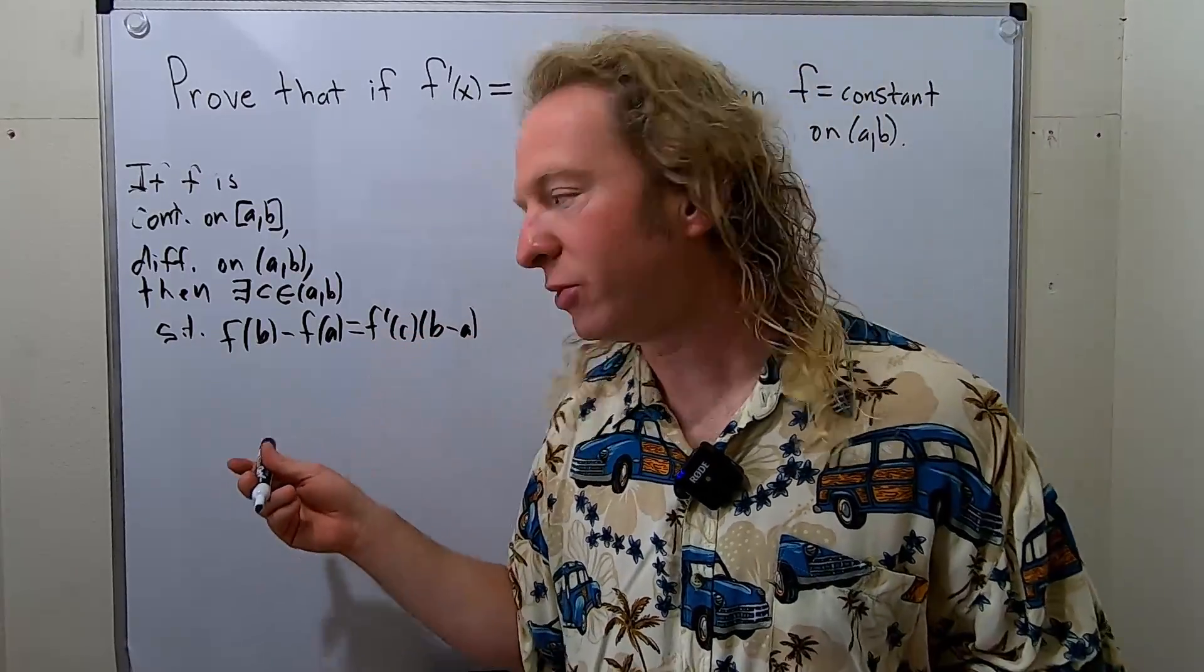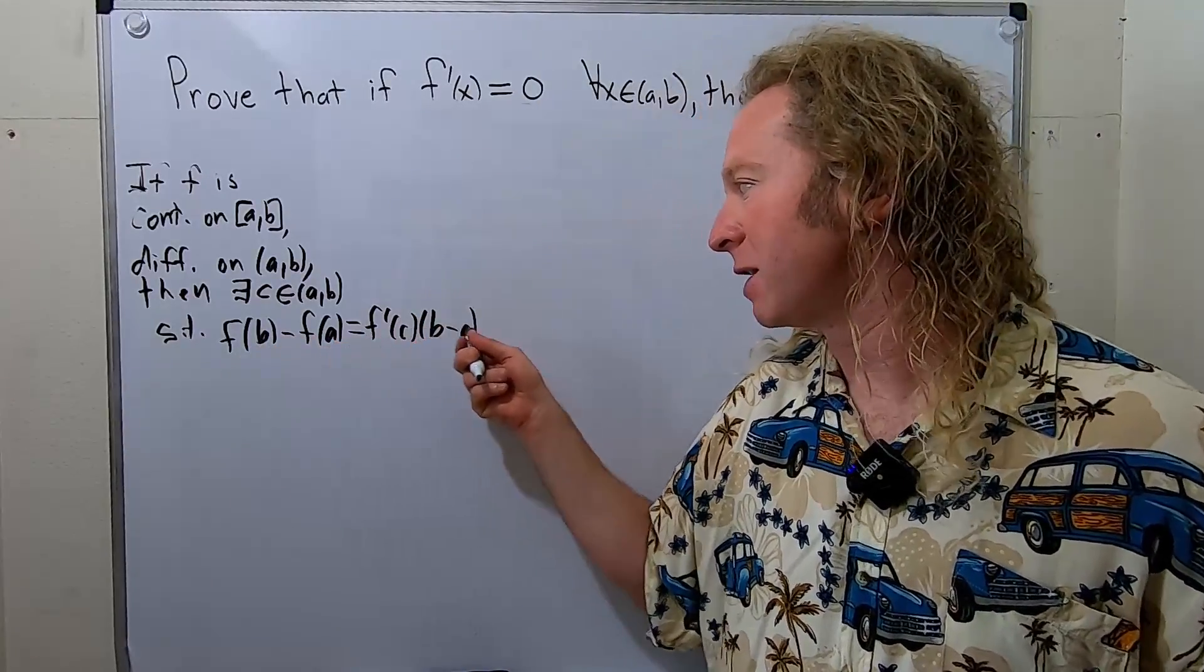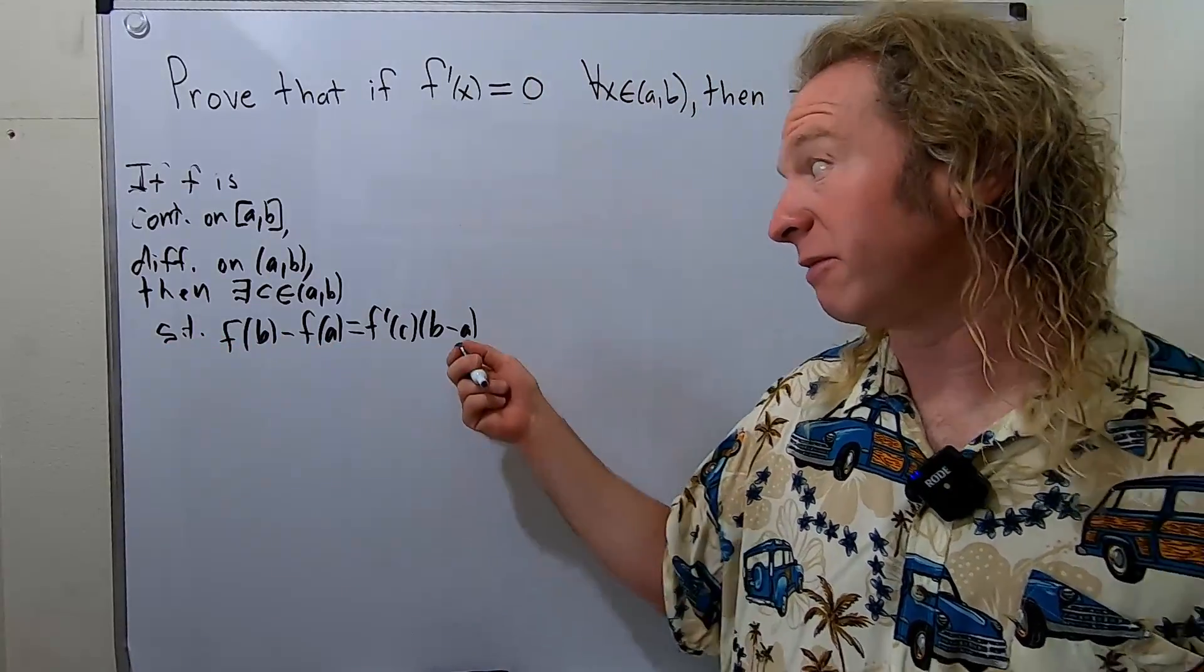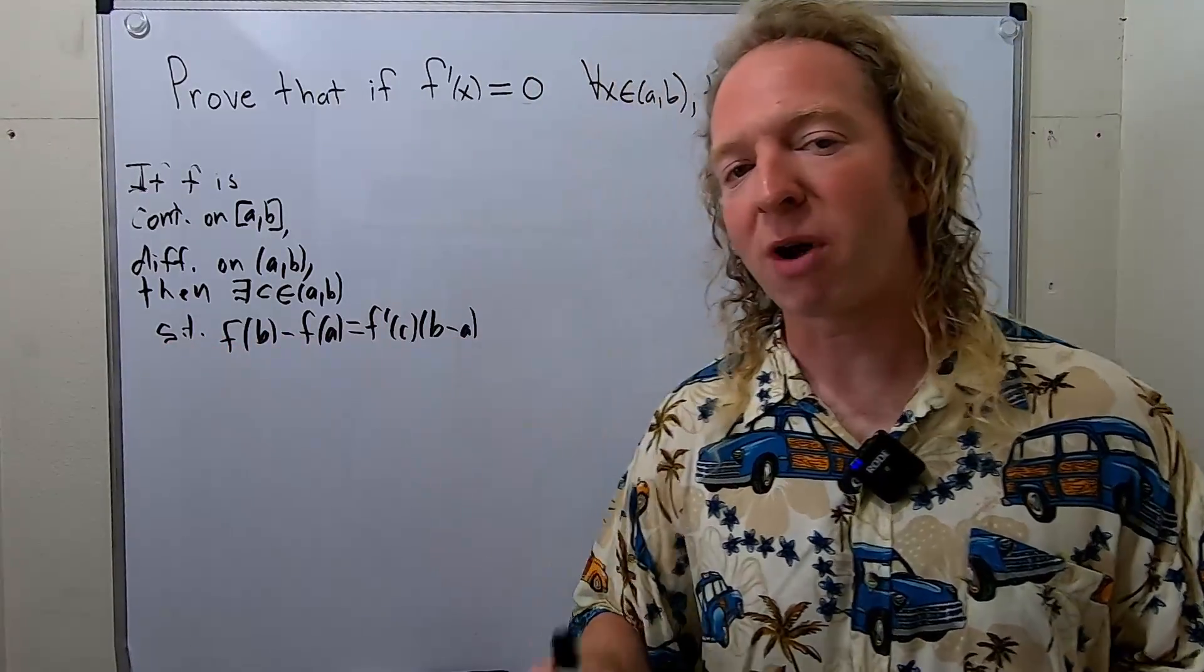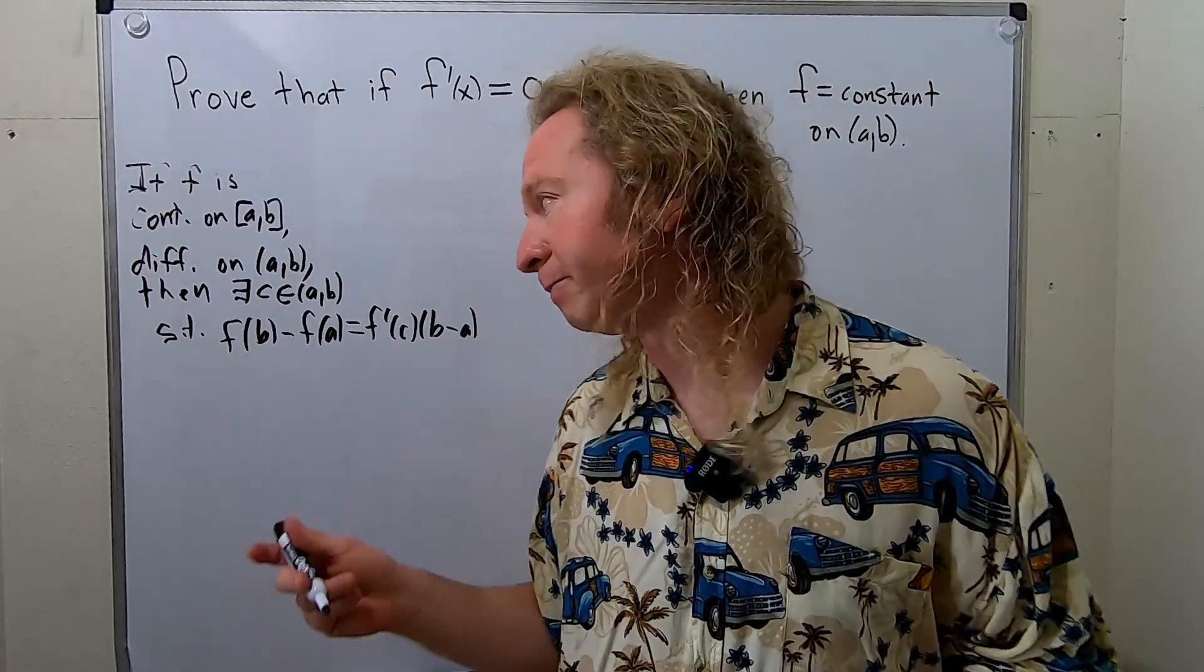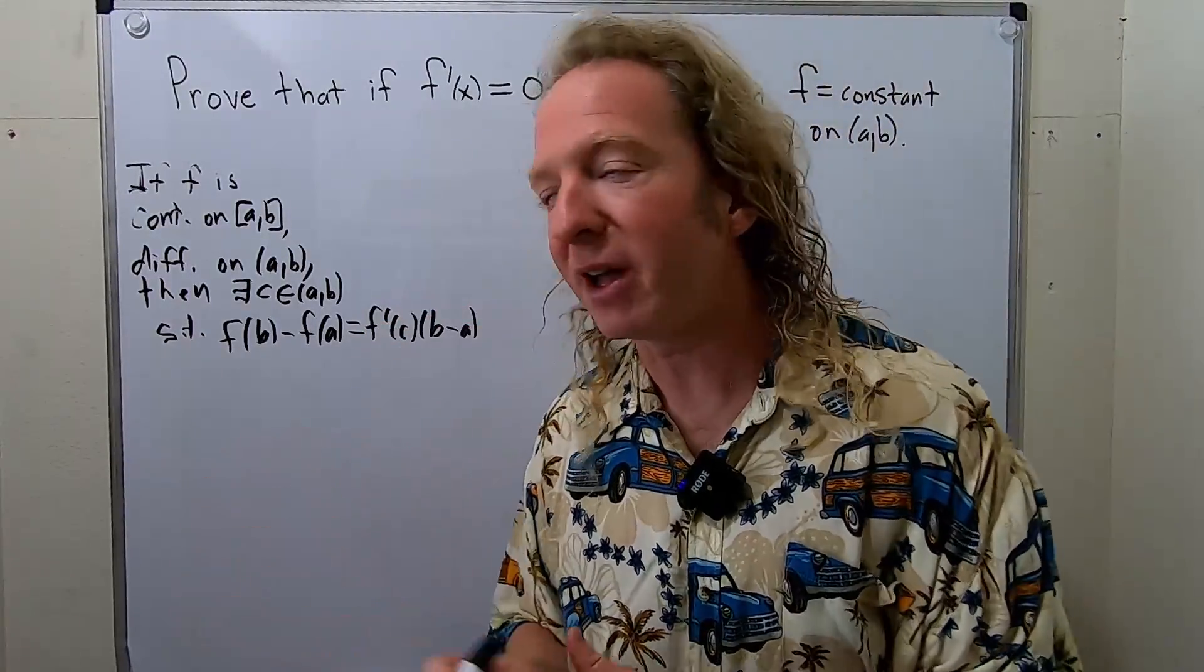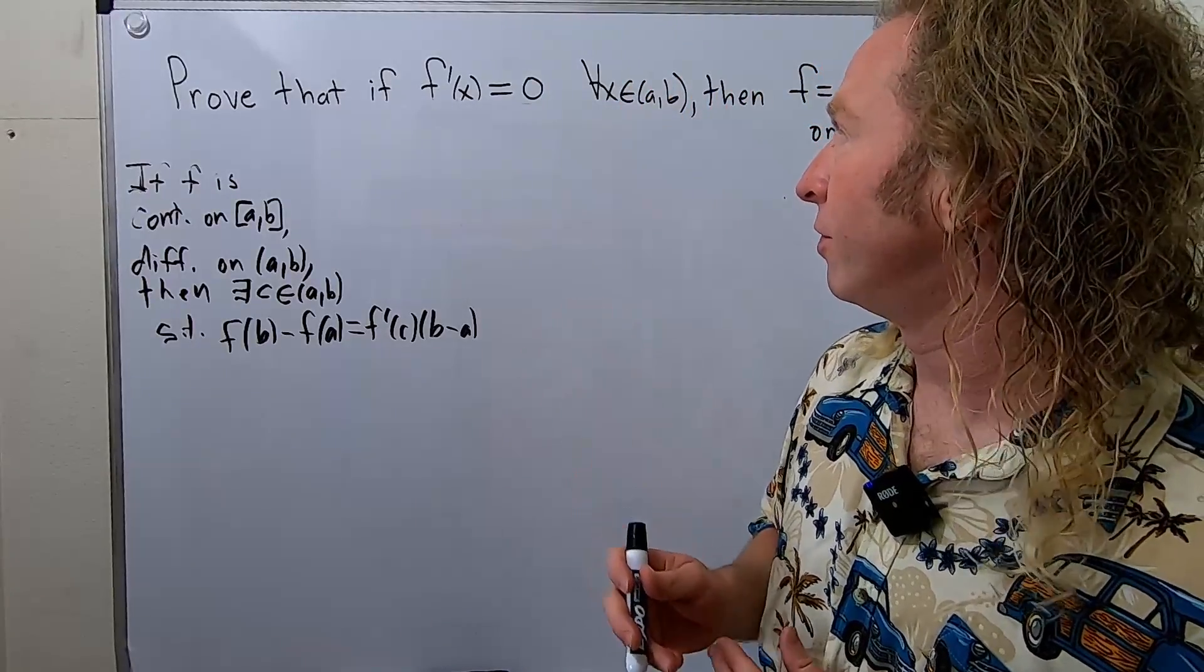And you can write this multiple ways. You can do f(a) minus f(b), a minus b. You can see that by multiplying by negative one. Another way to do it would be to divide by b minus a. That's probably the way you've seen it if you've had calculus one. In any case, we're going to use this version of the mean value theorem in order to prove this problem.